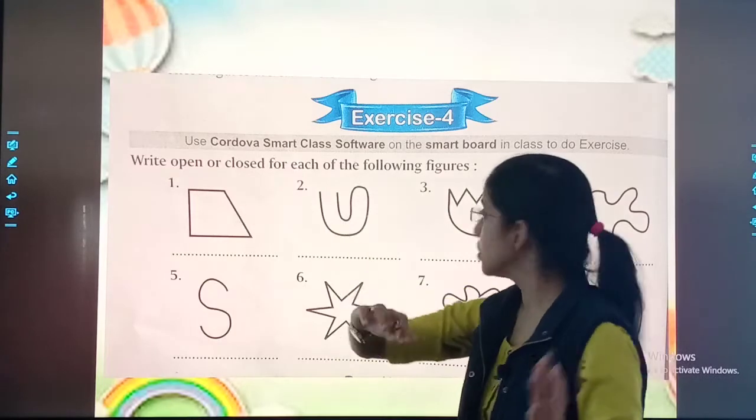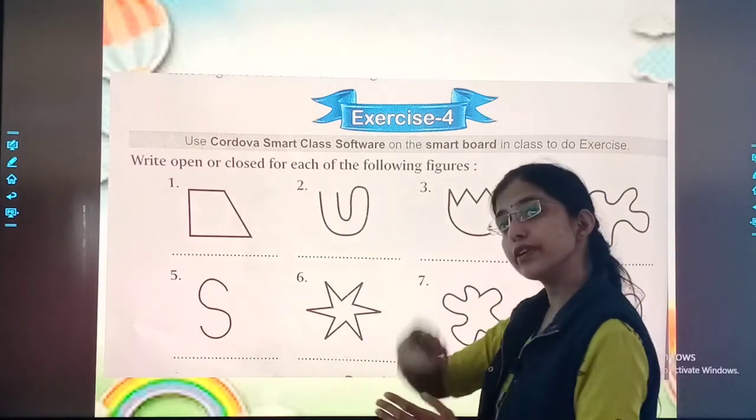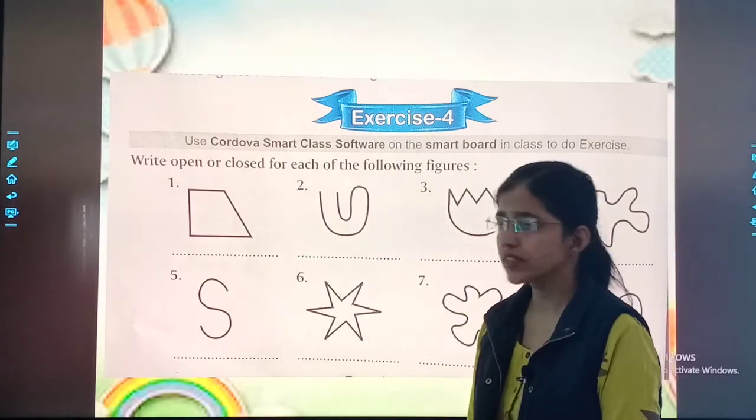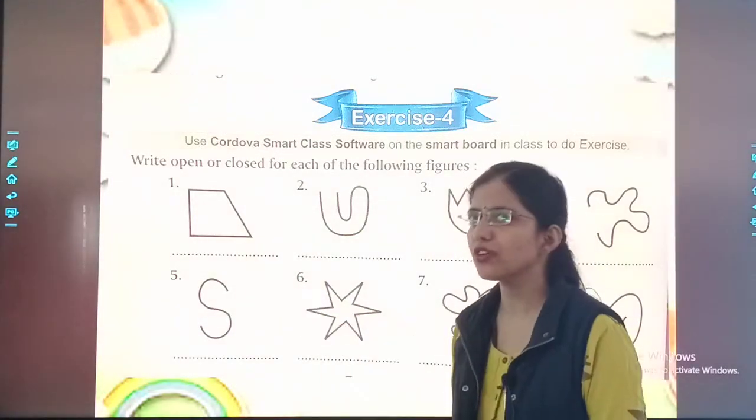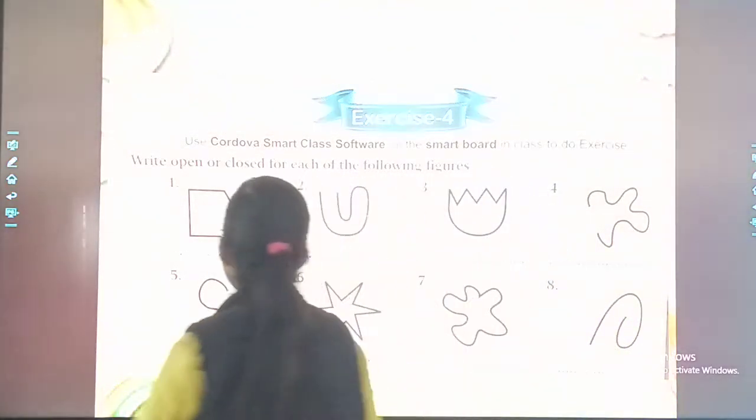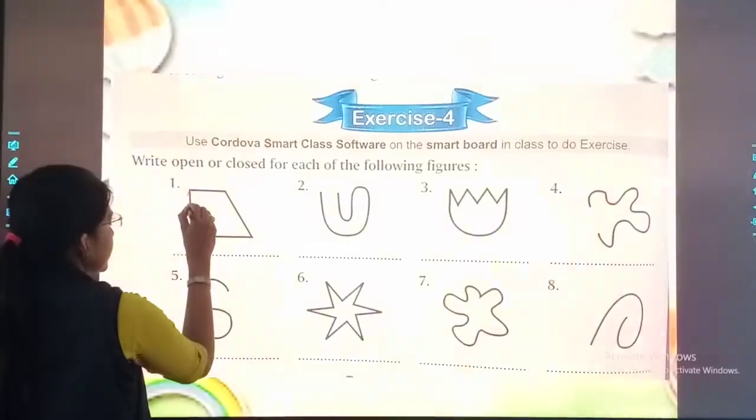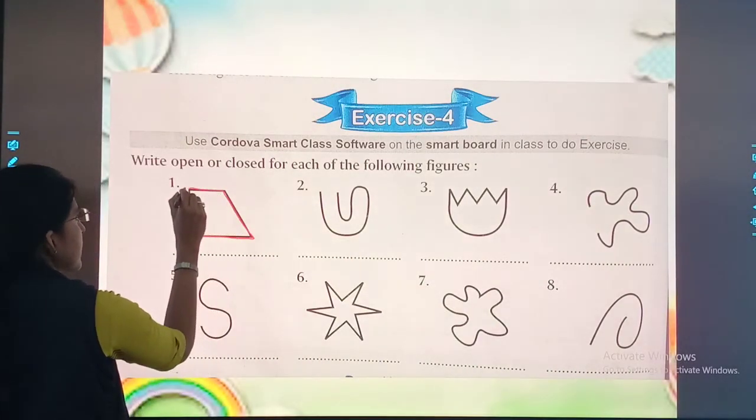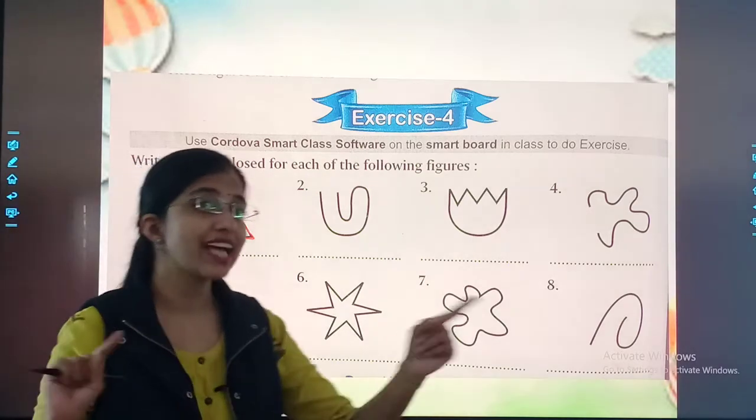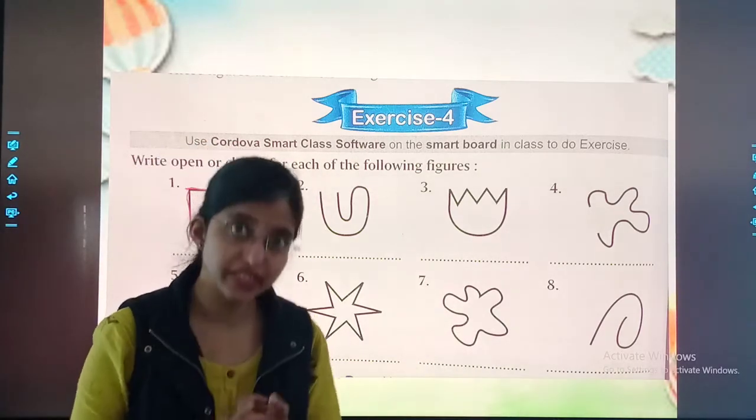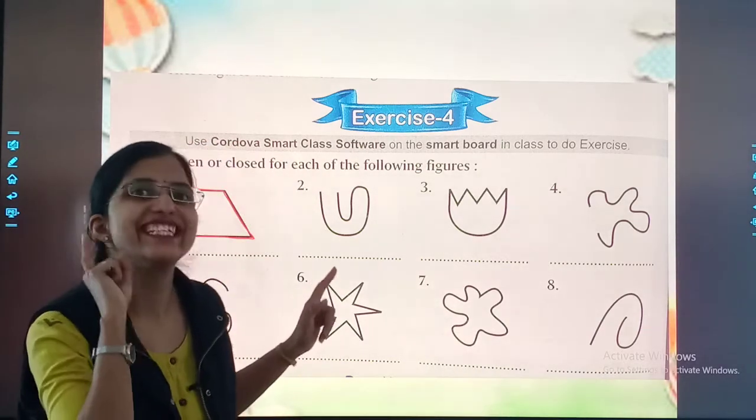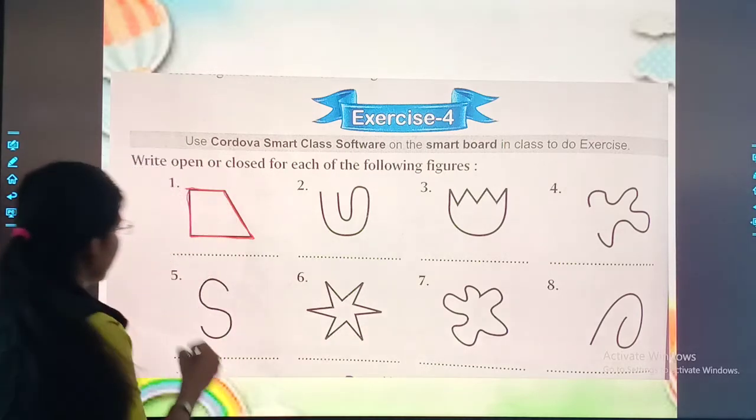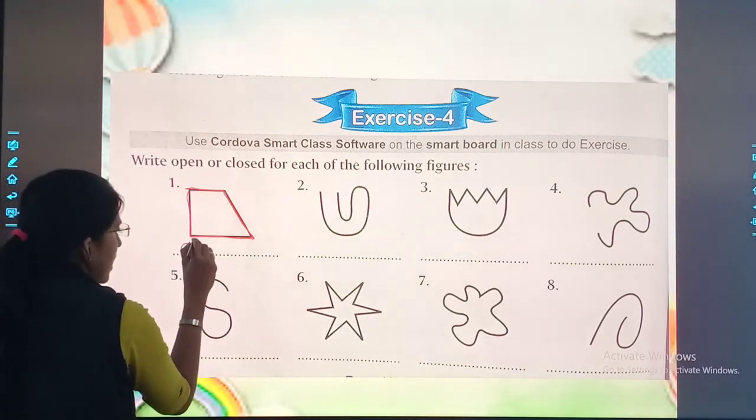Write open or closed for each of the following figures. The first one. Is this an open figure or a closed figure? Let's find out. This is my starting point and then see, it is ending here. So, the starting point and ending point are the same. So, this is... Yes! This is a closed figure. So, I will write here closed.